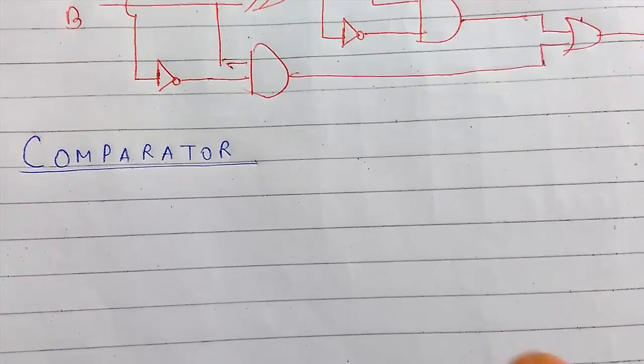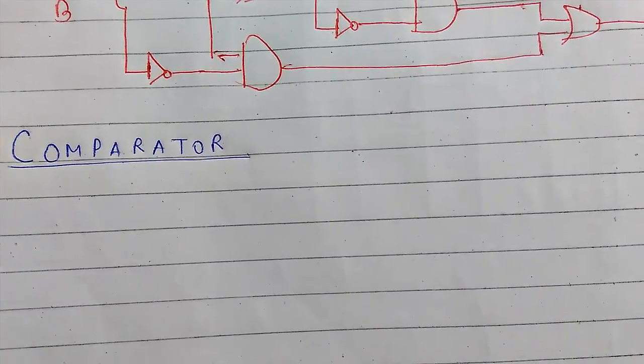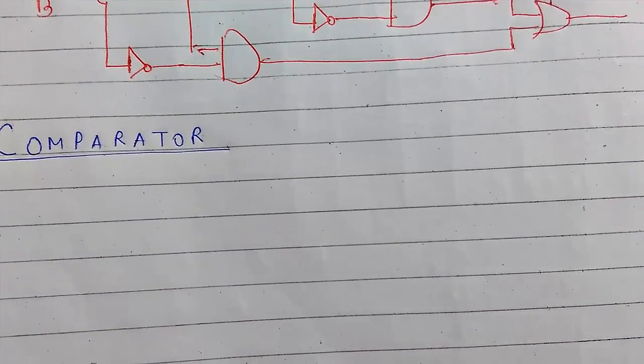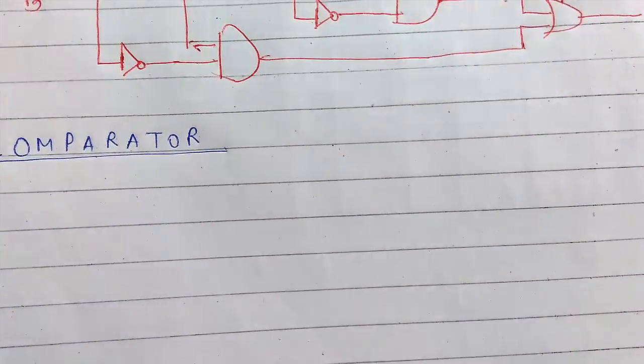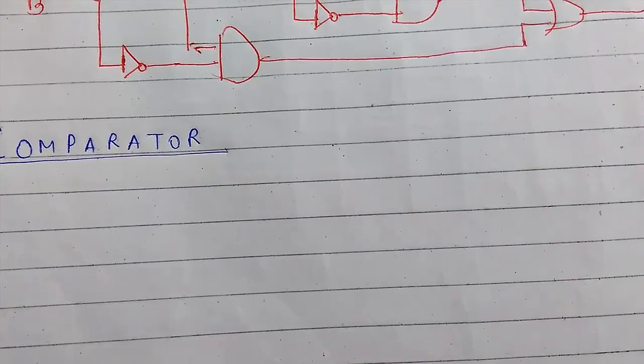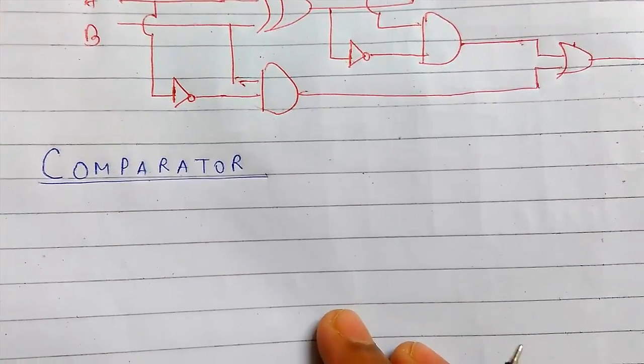For that case, when a comparator compares two binary numbers and takes decision whether one of the inputs is larger or smaller than the other one or equal, it generates three outputs like greater, smaller and equal. This comparator is known as magnitude comparator.